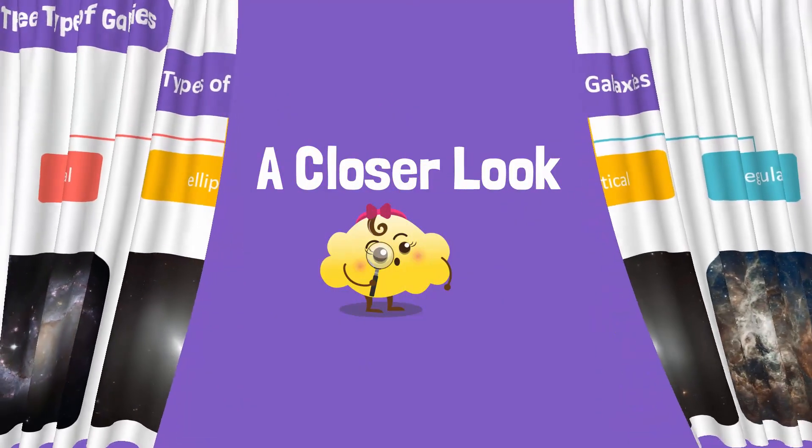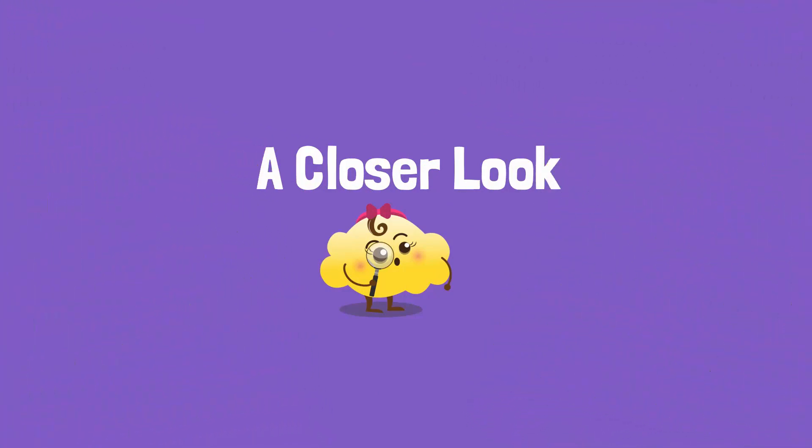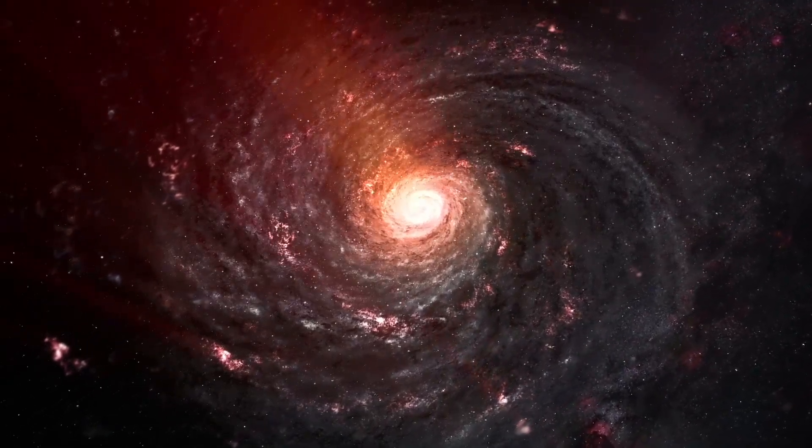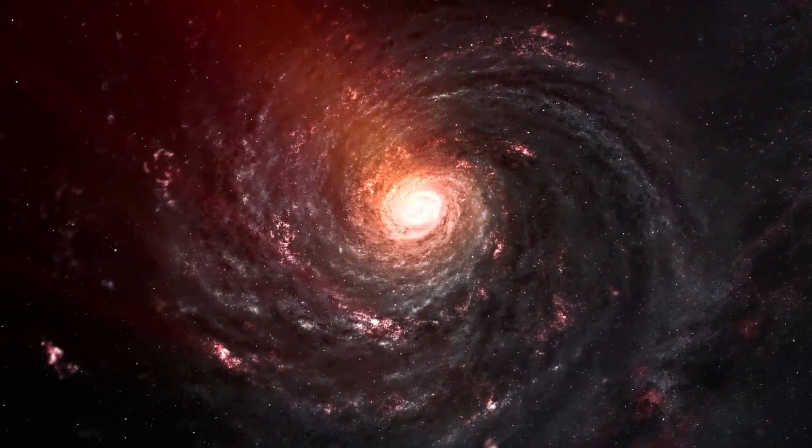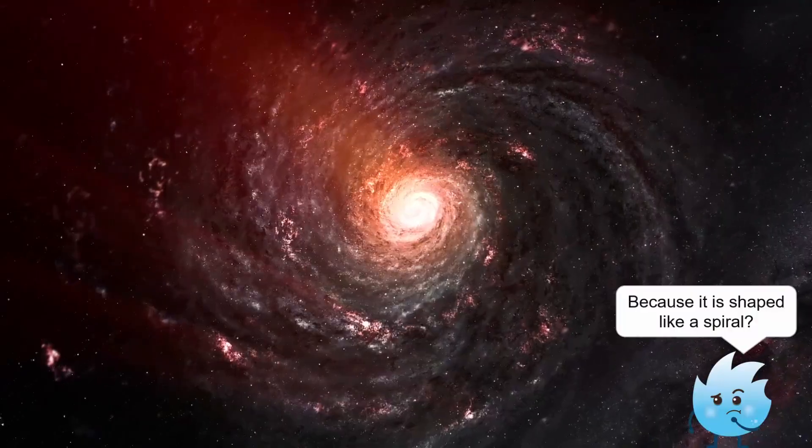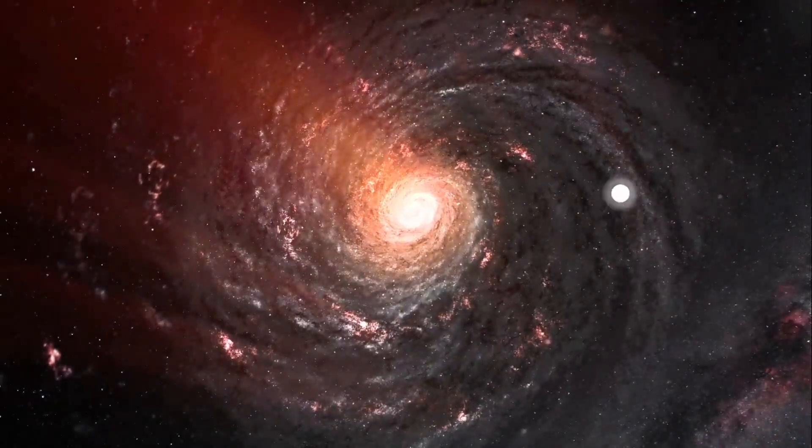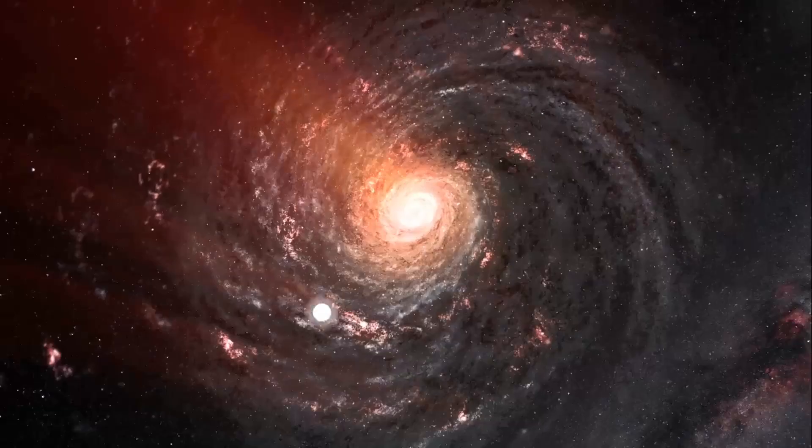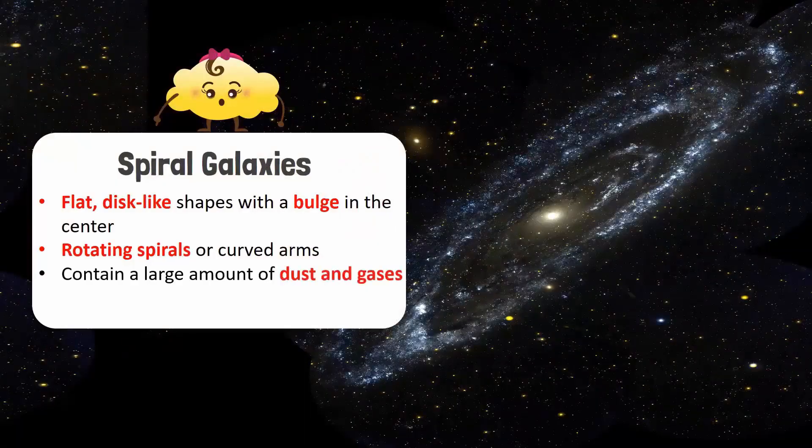Let's look closely at each of these galaxies. This is a spiral galaxy. Can you guess why? Because it is shaped like a spiral. Exactly. A spiral galaxy has a flat disc-like shape with a bulge in the center. Spiral galaxies have spirals or curved arms that rotate about the center of the galaxy. These galaxies contain a large amount of dust and gases.